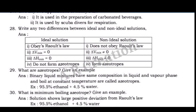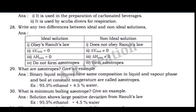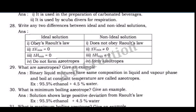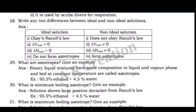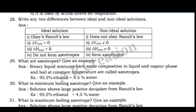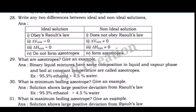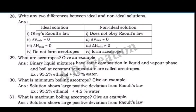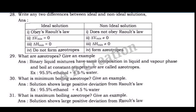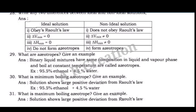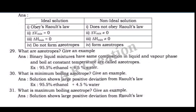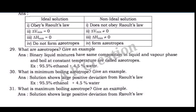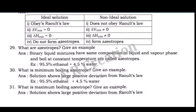Question 30: What is a minimum boiling azeotrope? Give an example. Answer: A solution that shows large positive deviation from Raoult's law forms a minimum boiling azeotrope. Example: 95.5% ethanol + 4.5% water.